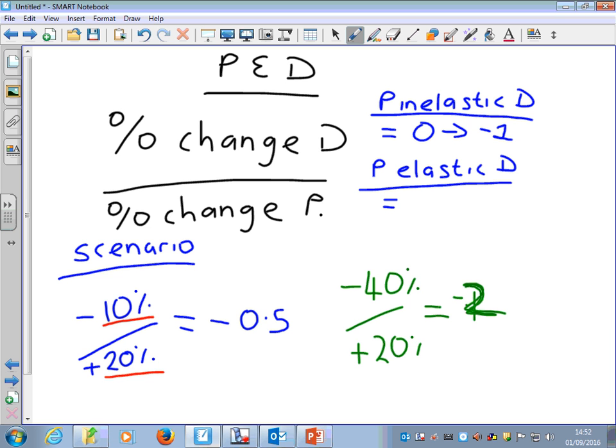Now if I've got a score like this, this would show me a price elastic demand. And from the formula, if I get a number anywhere between minus 1 all the way to minus infinity, then demand is price elastic. And what this basically means is that demand is responsive to a change in price. We say demand is responsive to a change in price when the change in demand exceeds the change in price.